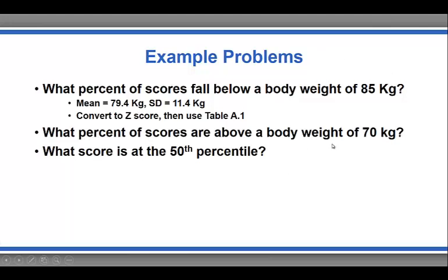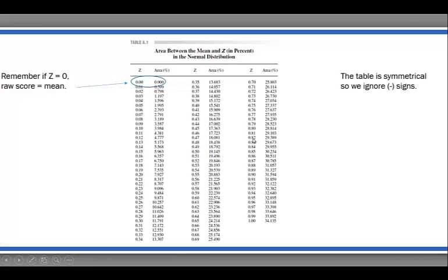Let's do another example on the other side of the distribution. What percent of scores are above a body weight of 70 kilograms? Our mean is 79.4 and the raw score is 70, with a standard deviation of 11.4. We should get a negative z-score because 70 is less than 79.4. Doing the math: 70 minus 79.4 divided by 11.4 gives us a z-score of negative 0.82. Going to the z-table and ignoring the sign, z of 0.82 is associated with an area of roughly 29.4%. So 29.4% of the scores exist between a raw score of 70 and the mean of 79.4.